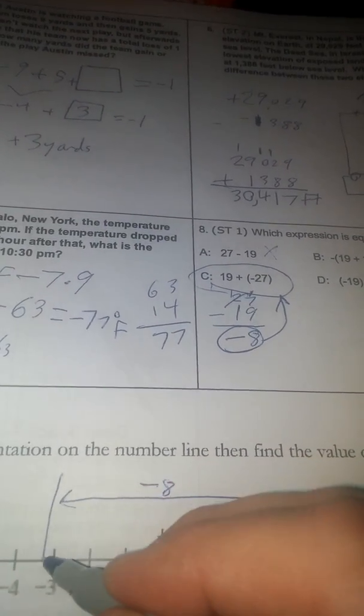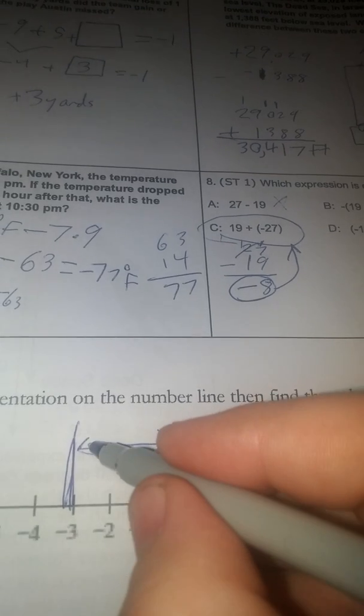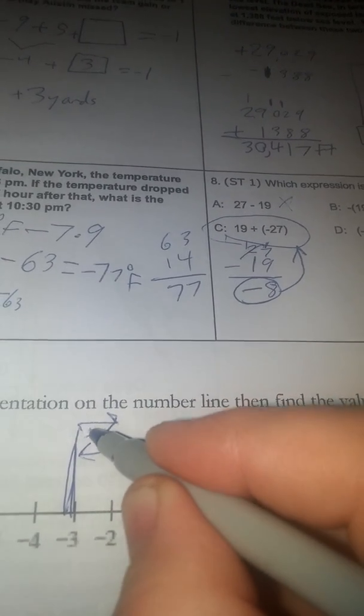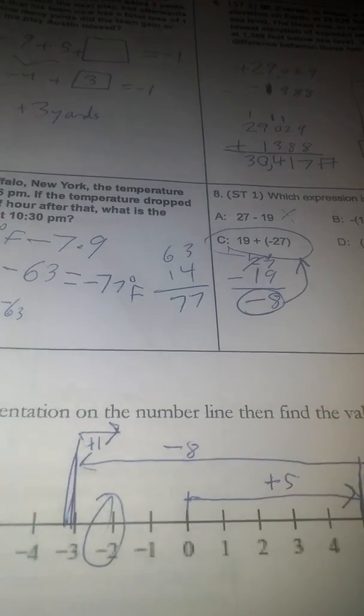That's minus 8 because 5 and 3 is 8. And then I've got to add one more. So here I am at negative 3. I'll go up one more. Plus 1. And I am at negative 2.